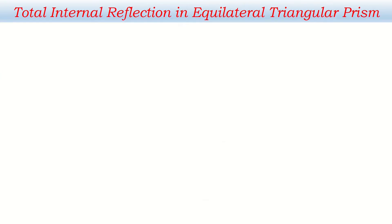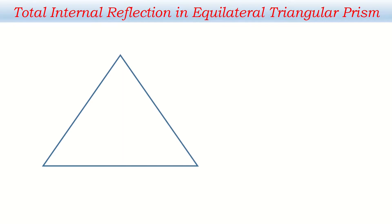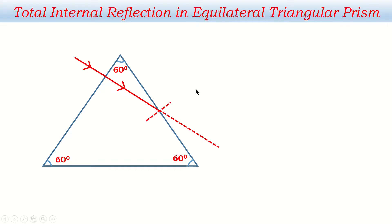Let's look at how total internal reflection occurs in an equilateral triangular prism. All three angles of this prism are equal at 60 degrees. If a ray of light enters one face traveling along the normal, it passes straight without bending. However, it cannot exit from another face. The angle of incidence at that face is 60 degrees — because 90 plus 60 equals 150, and 180 minus 150 gives 30, making this internal angle 30 degrees.